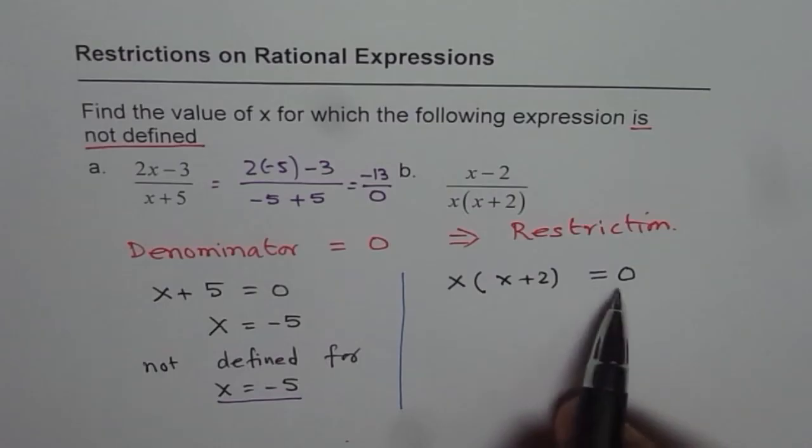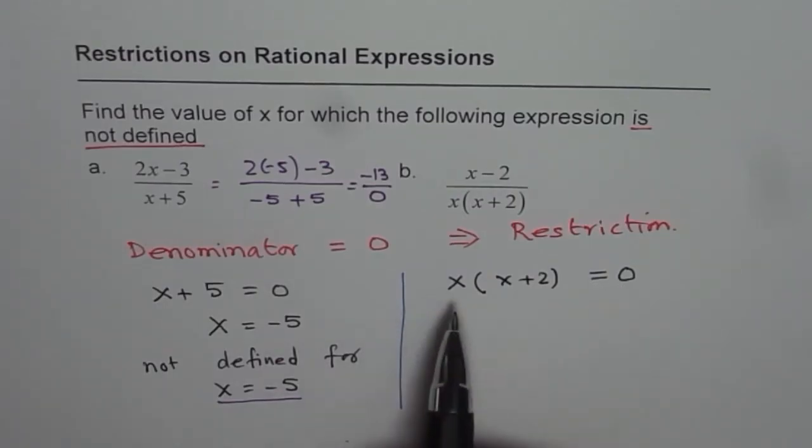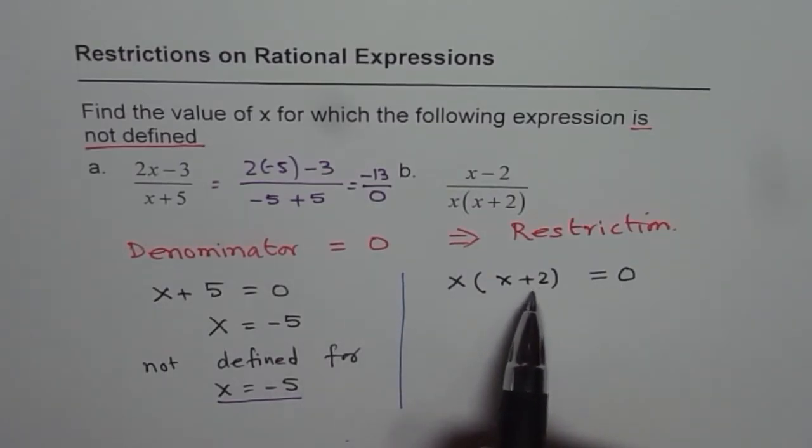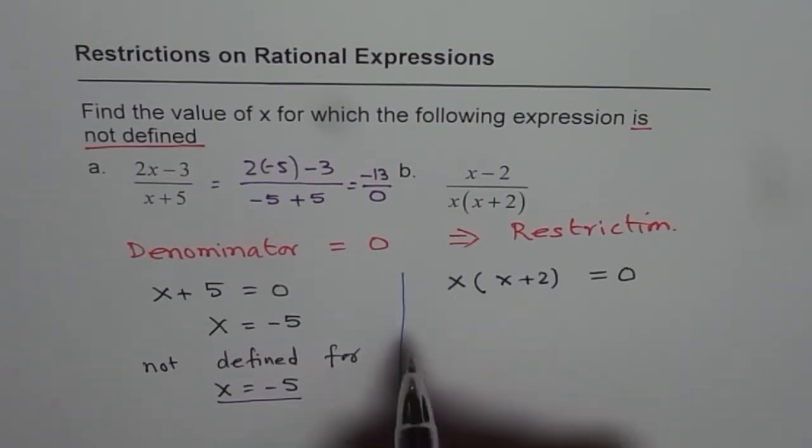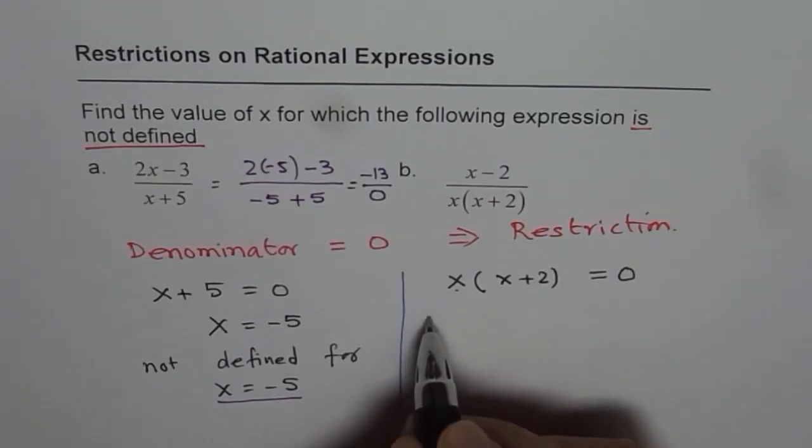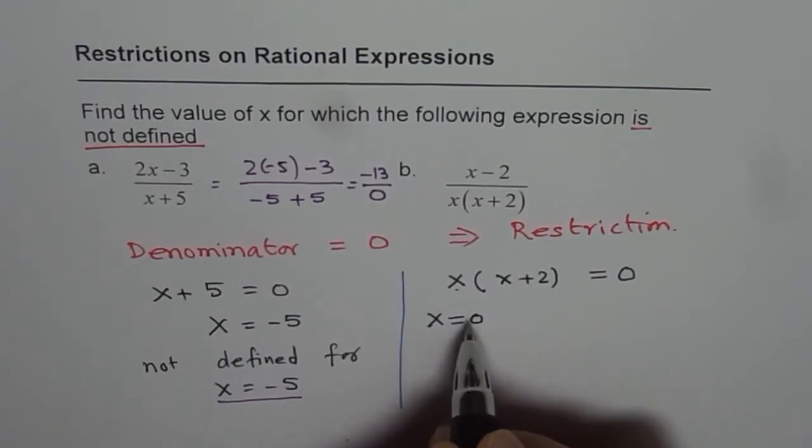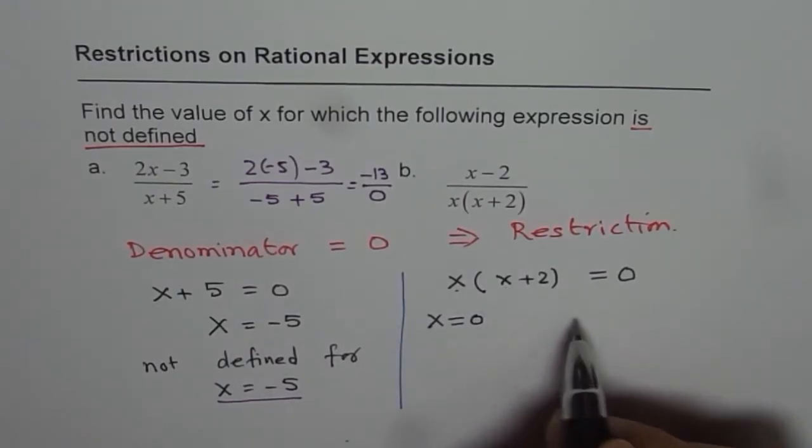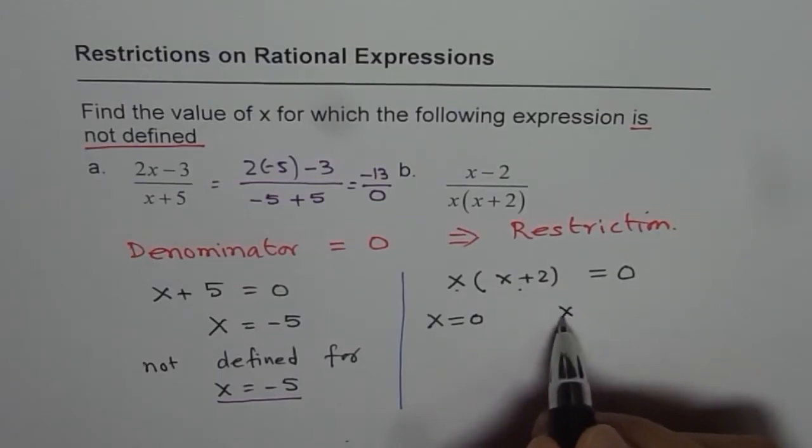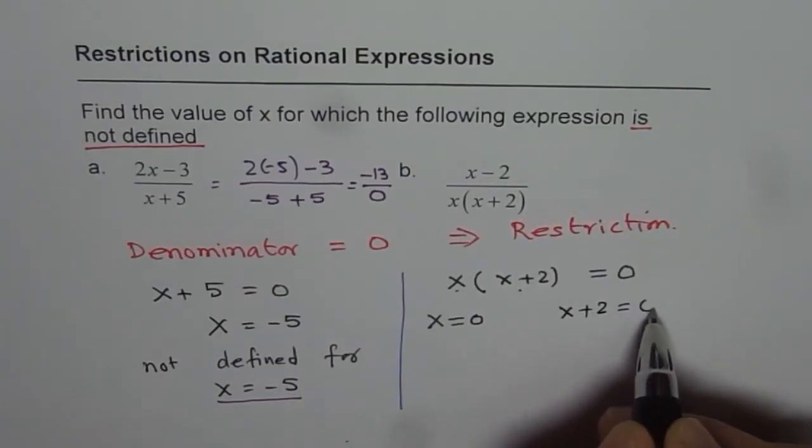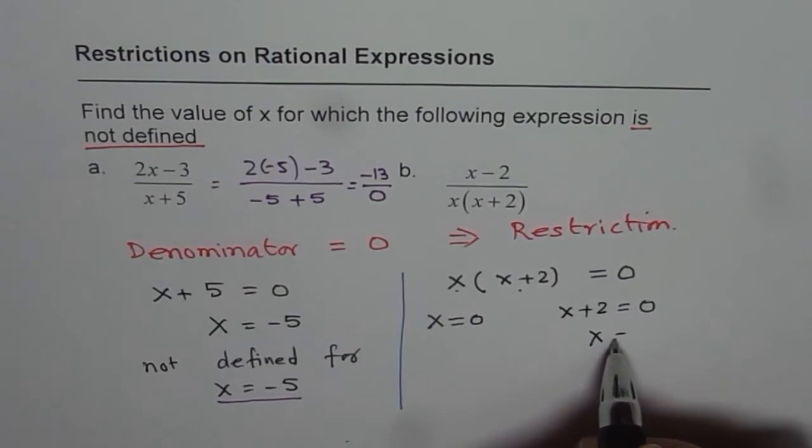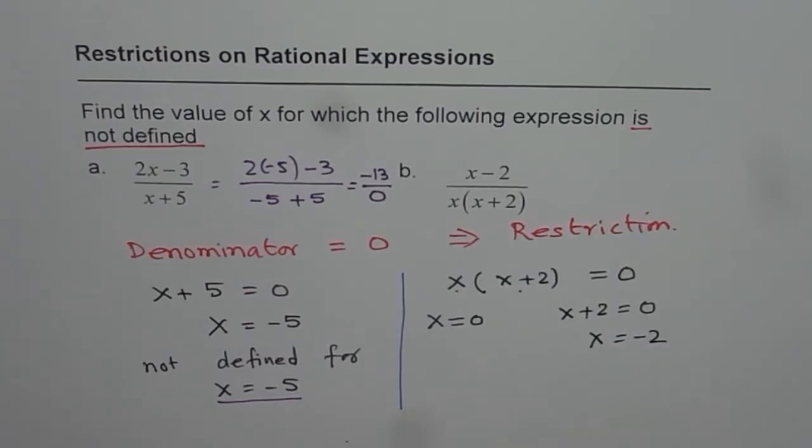Now what values of x can make it 0? x times x plus 2 means there are two factors. So both of them will lead to restriction. One is because of this factor, so we have x equals to 0. The second is because of the other factor, x plus 2 equals to 0. If you solve for x here you get x equals to minus 2. Therefore you get two answers in this case.